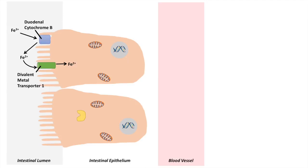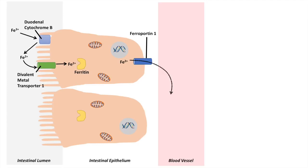Once the Fe2+ is in the enterocyte, it can be in a free form or a bound form. If it's in a bound form, it binds to a protein known as ferritin, or another protein known as hemocytorin. If you have free Fe2+, it'll come into contact with another transporter on the other side of the enterocyte — the side that faces a blood vessel — called ferroportin 1, and that Fe2+ is transported through ferroportin 1 into the bloodstream.